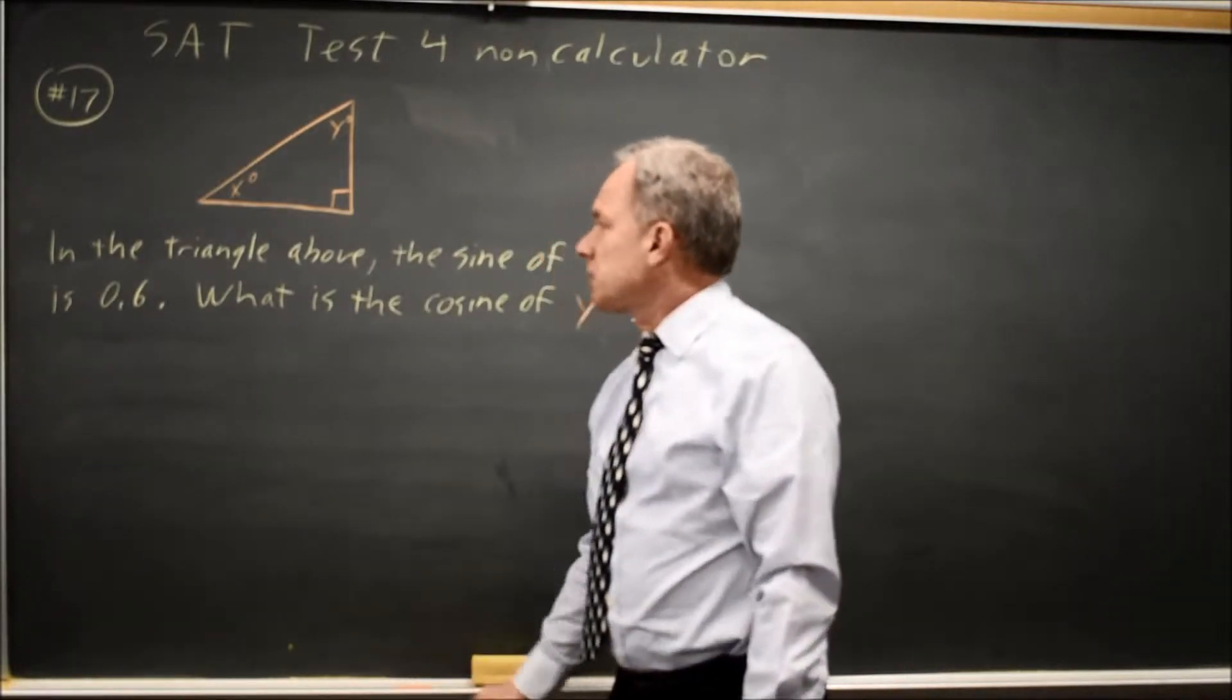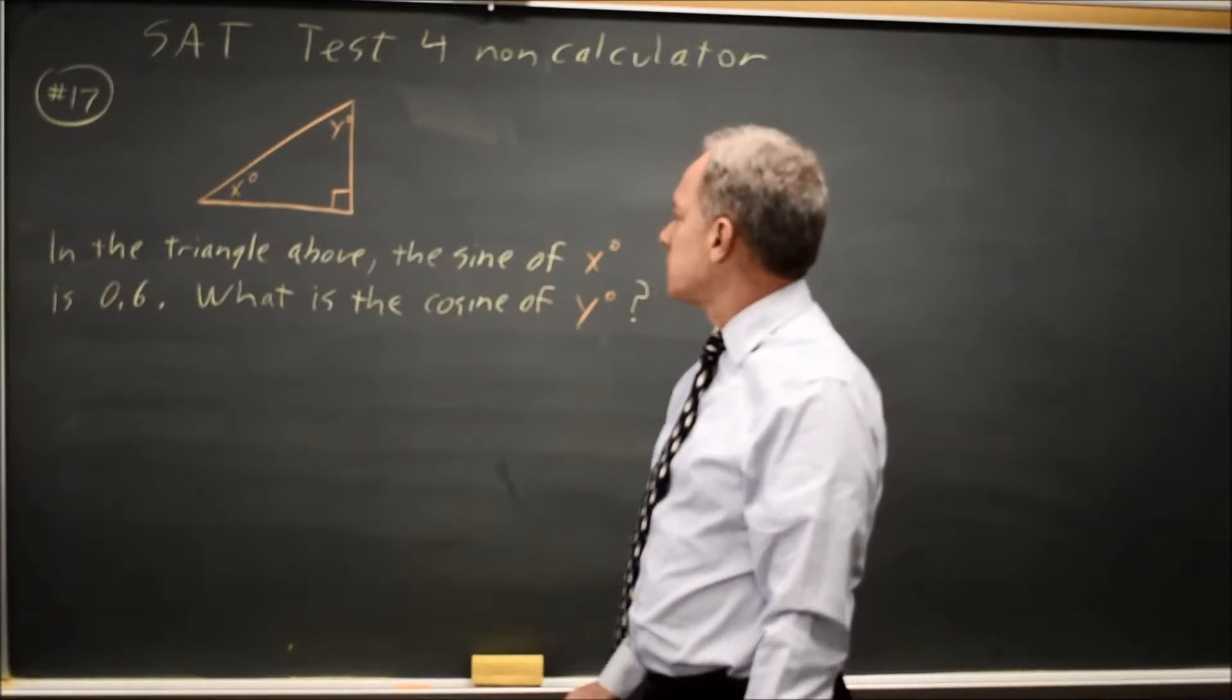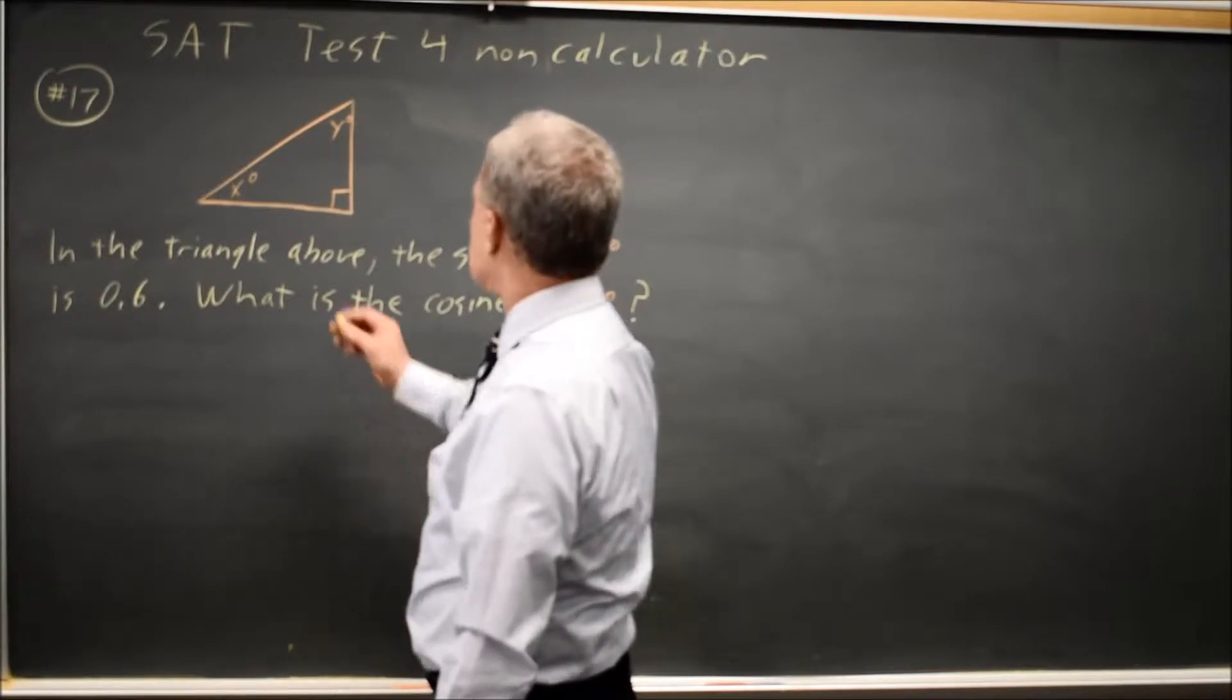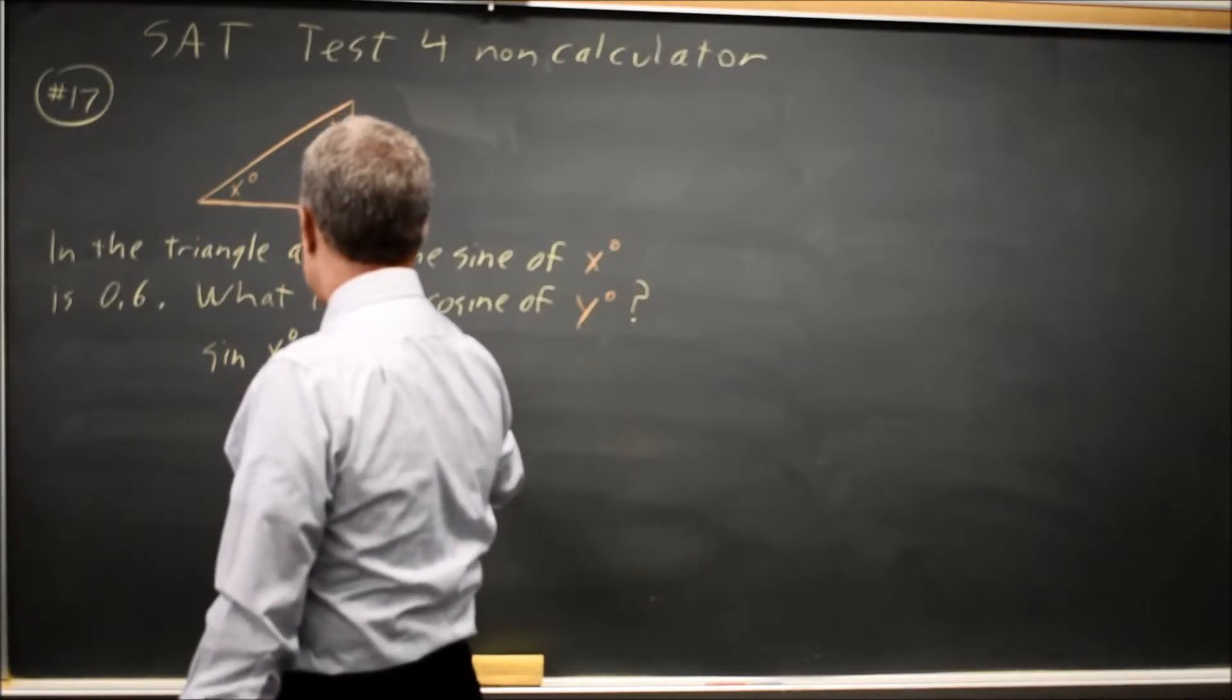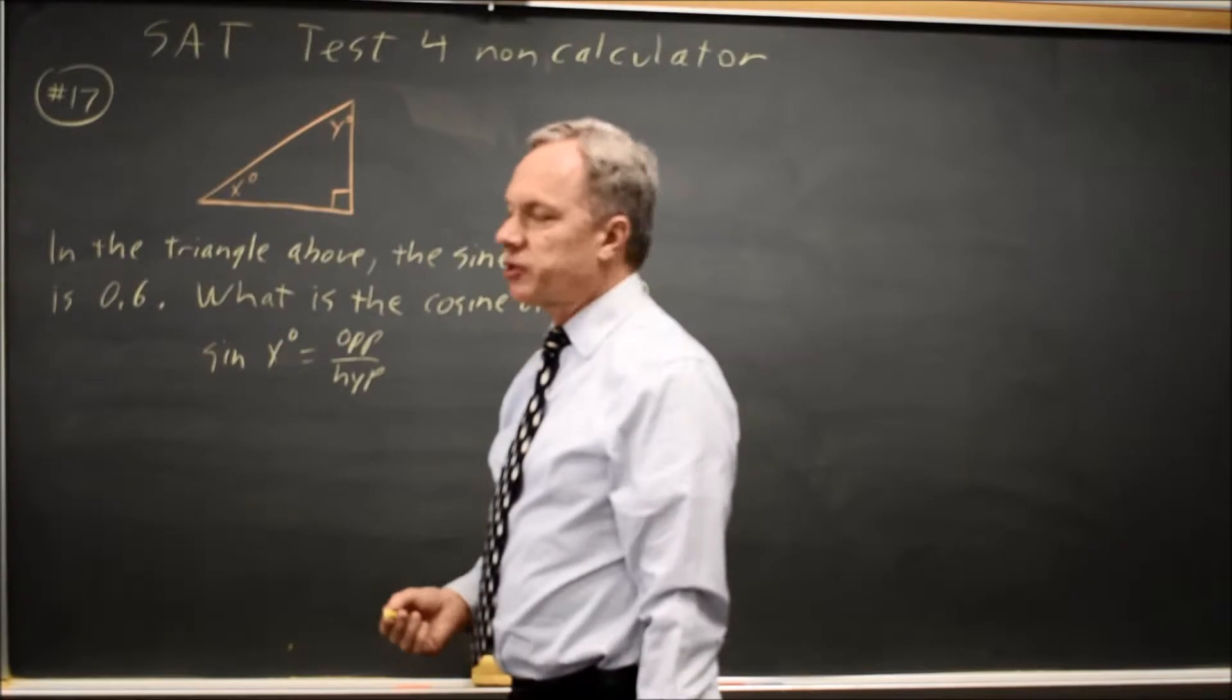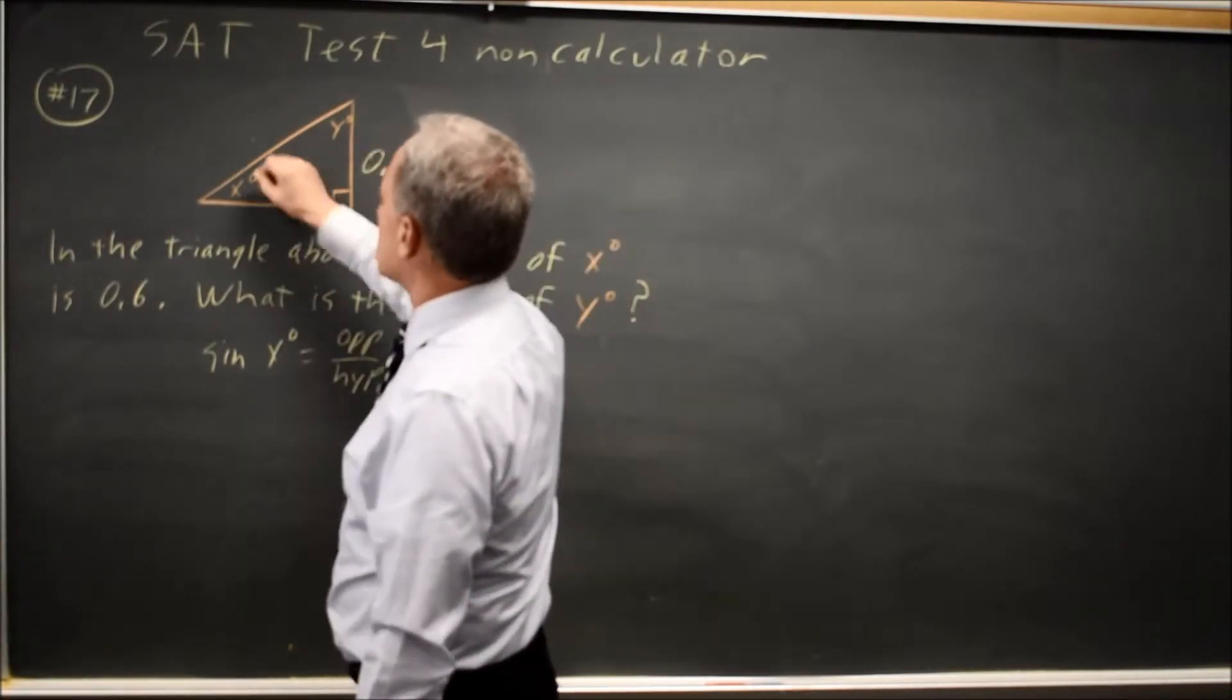In this case, I like to label the sides of the triangle with values that will give me the correct trig function. The sine of x is the opposite side over the hypotenuse, where the hypotenuse is the side opposite the right angle. So the opposite over the hypotenuse is 0.6 over 1.